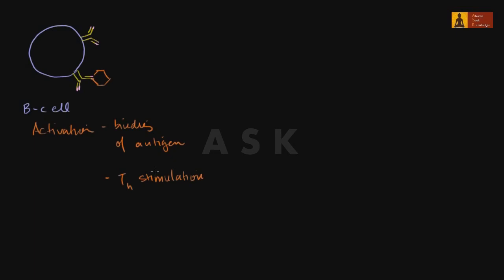Where does the helper T-cell stimulate this guy? Well, B-cells are also antigen-presenting cells, so they'll suck the pathogen in, break it up, and present it on an MHC2 complex. Then an activated helper T-cell whose variable portion of their T-cell receptor is specific to this antigen can come along and activate the B-cell.